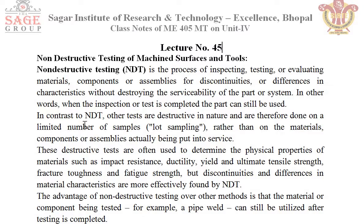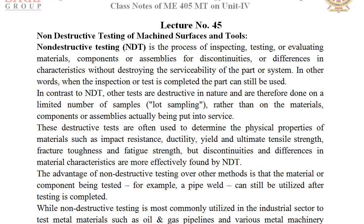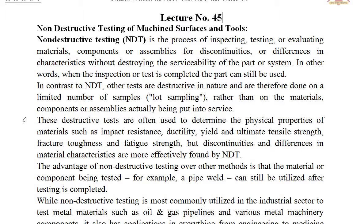In contrast to NDT, other tests are destructive in nature and are therefore done on a limited number of samples rather than on the materials, components, or assemblies actually being put into service. These destructive tests are often used to determine the physical properties of materials such as impact resistance, ductility, yield and ultimate tensile strength, fracture toughness, and fatigue strength. But discontinuities and differences in material characteristics are more effectively found by NDT.